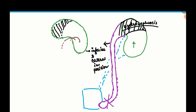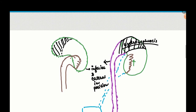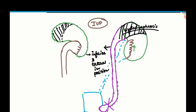On IVP, only the lower pole ureter is stained because the superior part has become non-functional due to hydronephrosis. Only the lower pole of the kidney drains, and it looks like a drooping lily — that is why the sign is called the drooping lily sign.